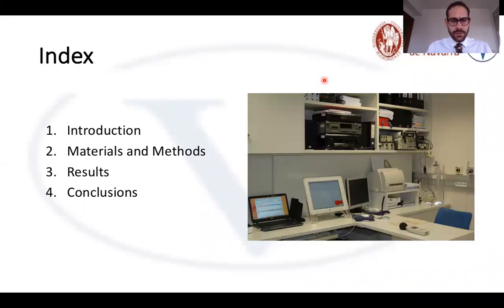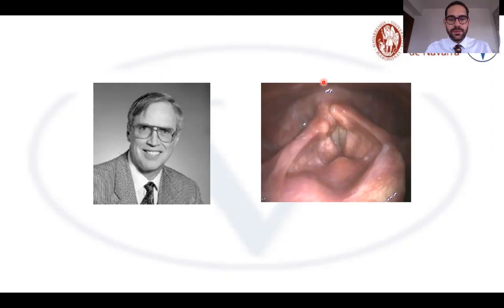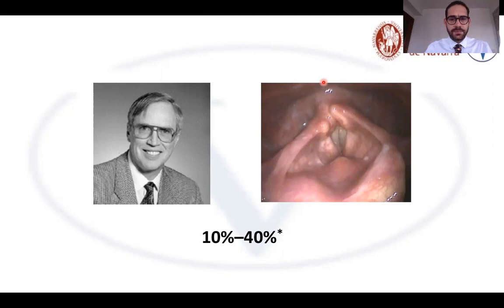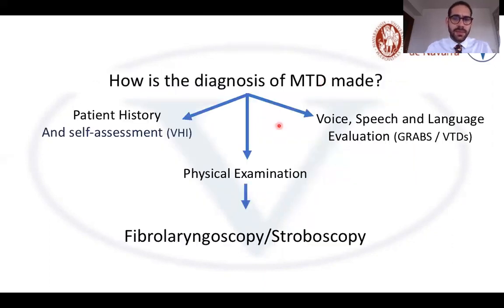For the introduction: MTD, or muscle tension dysphonia, was first described by Morrison in 1983. It's considered a functional voice disorder characterized by excessive tension of the extrinsic laryngeal muscles in the absence of a neurological or organic disease. It's important to highlight that this disorder accounts for between 10 and 40 percent of clinical caseloads at a voice clinic.